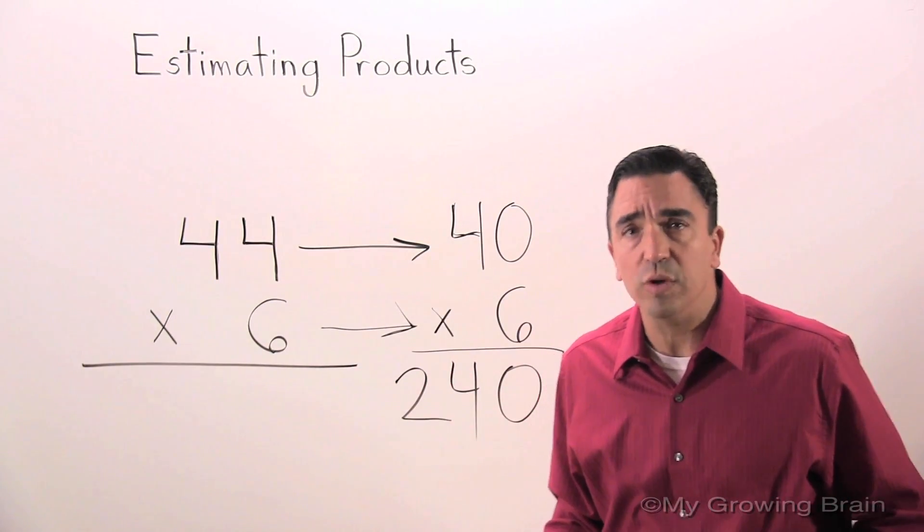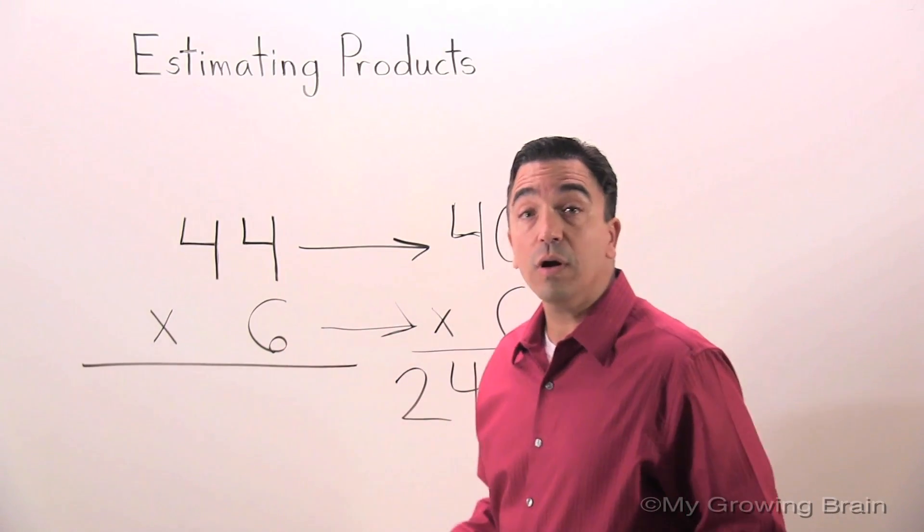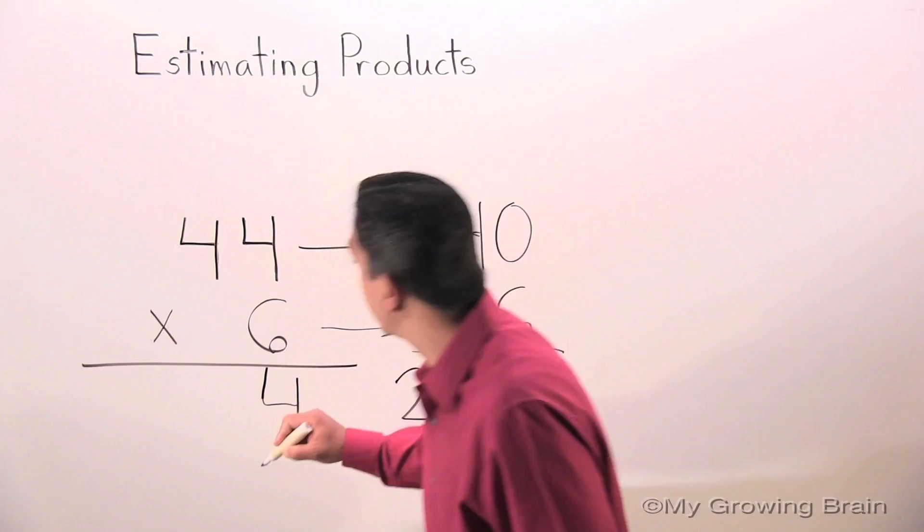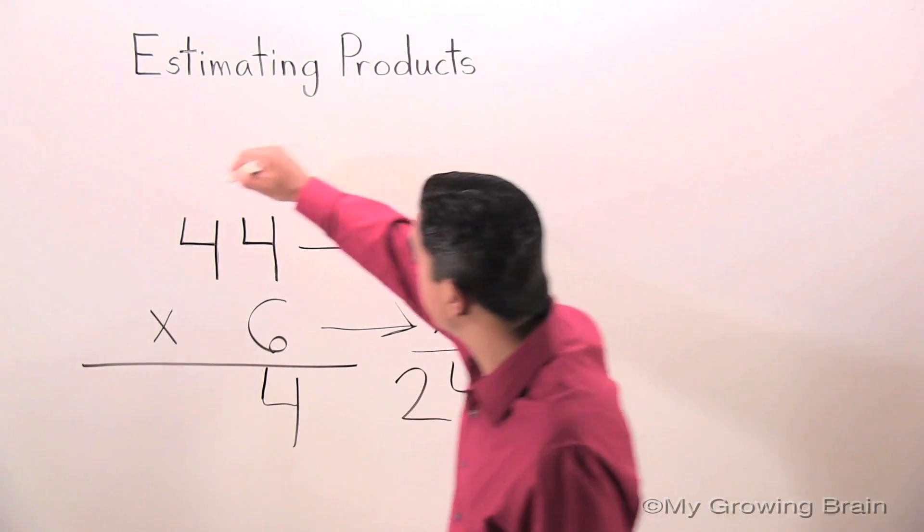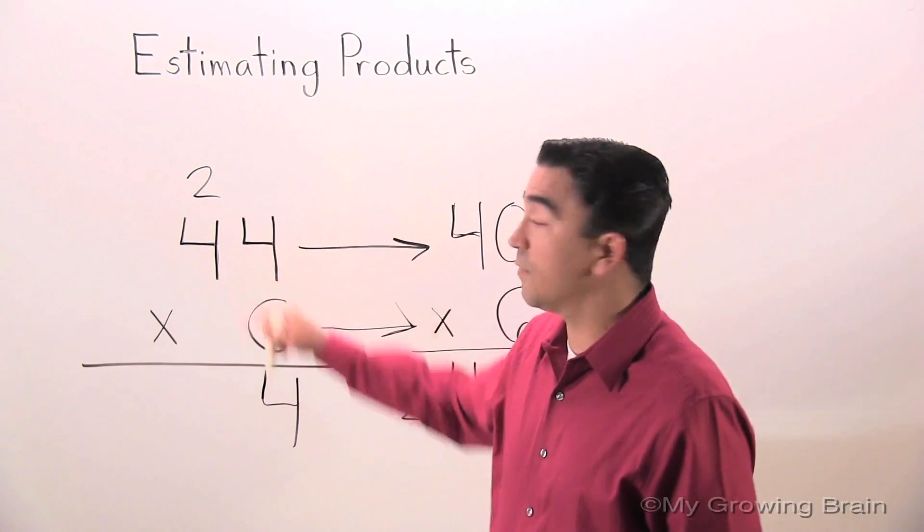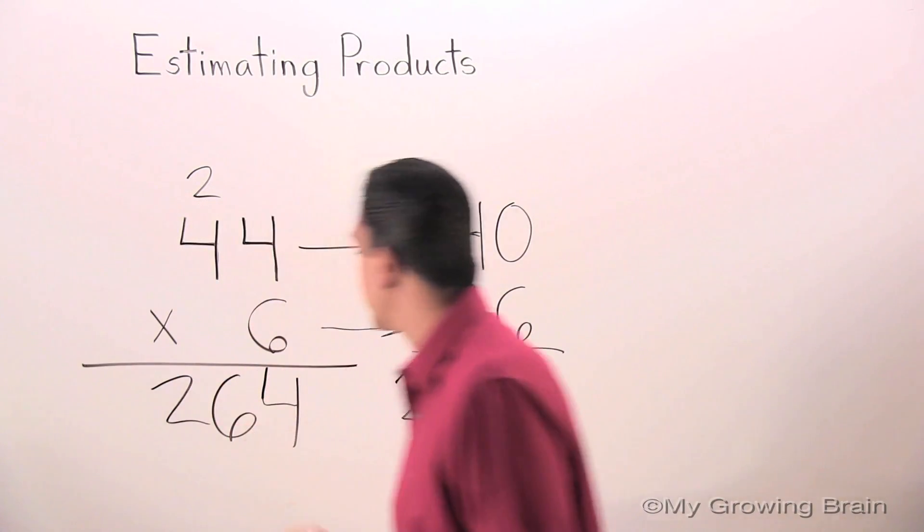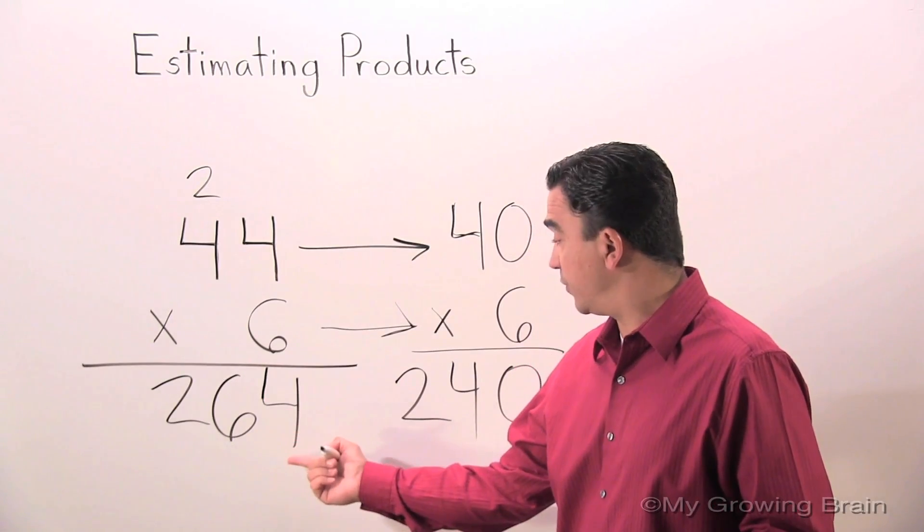Let's see what the actual answer would be. 6 times 4 is 24. Regroup the 2. 6 times 4 is 24. Plus 2 is 26. The actual answer is 264.